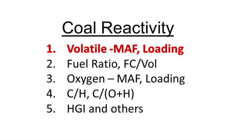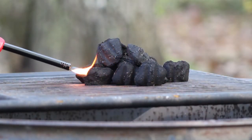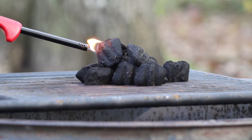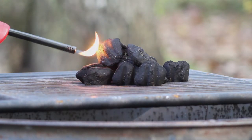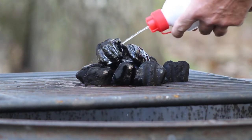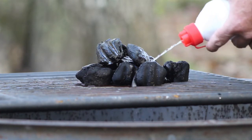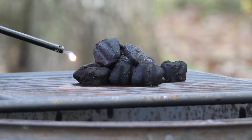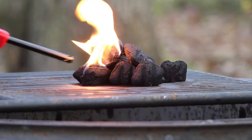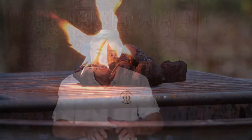I typically describe the volatile matter as being like the lighter fluid on a charcoal grill where you're going to grill some chicken, shrimp, or fish. You have your charcoal, and then to get that charcoal lit, you put some lighter fluid on it — some organic, flammable liquid-type material. You soak the charcoal in it and then it's easier to light. So the volatile matter in coal is like that lighter fluid.